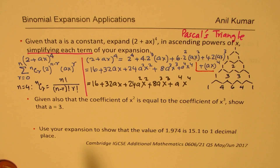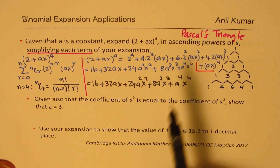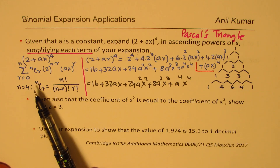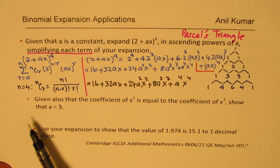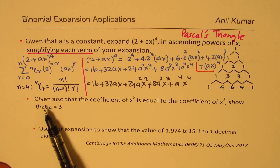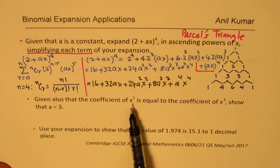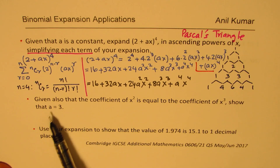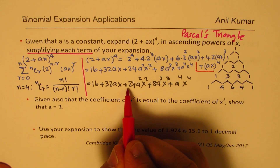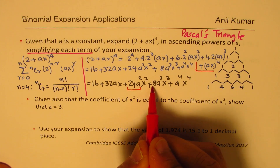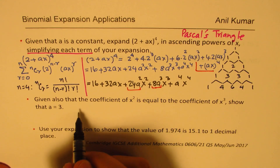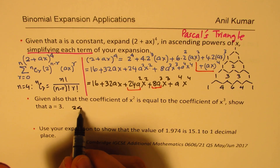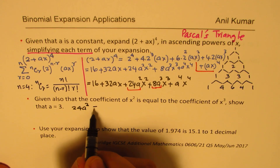For part b, we're given that the coefficient of x² equals the coefficient of x³. From our expansion, the coefficient of x² is 24a² and the coefficient of x³ is 8a³. So we set them equal: 24a² = 8a³.